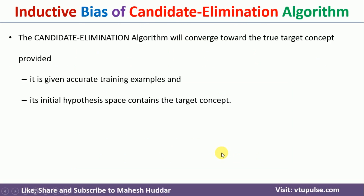In the previous video, I discussed remarks on the candidate elimination algorithm. The candidate elimination algorithm will converge to a true target concept provided two conditions are satisfied. The first is that the training examples should be accurate — there should not be any errors. The second, and very important, is that the initial hypothesis space we consider should contain the target concept. If the target concept is not present in the hypothesis space, we cannot guarantee that the algorithm will converge to the true target concept.